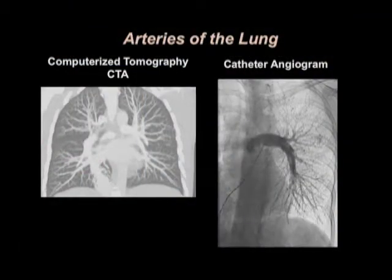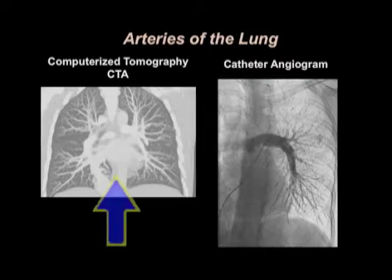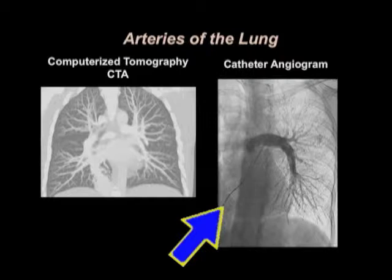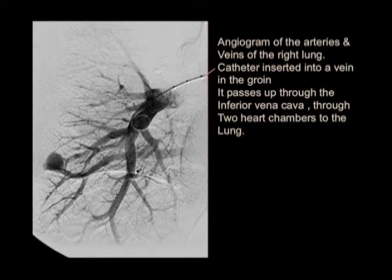This is a rather more complicated picture just to show you the range of things we do. On the left you see a CTA showing the vessels of the lung with the heart in the middle, and then you see the other way of seeing it — we've threaded a catheter up through from the groin through the heart into the pulmonary artery and you see all the vessels.